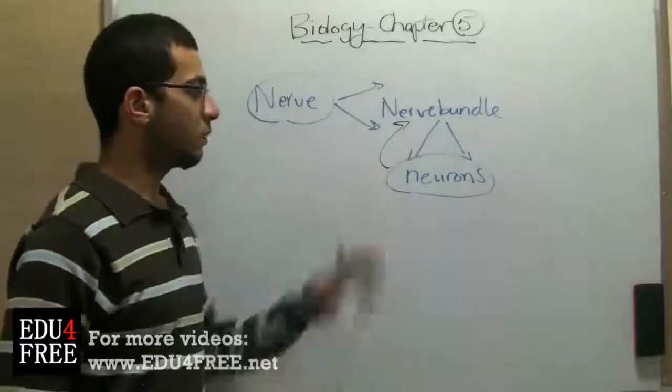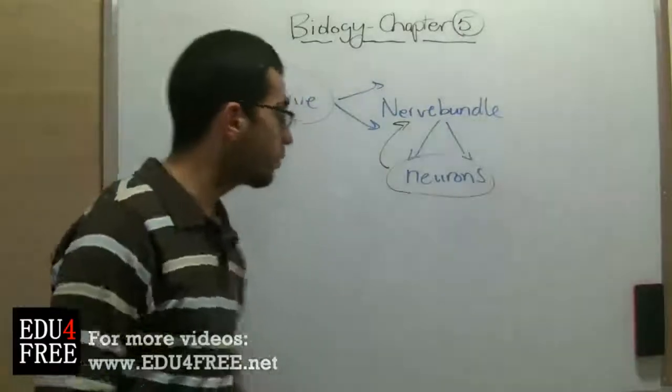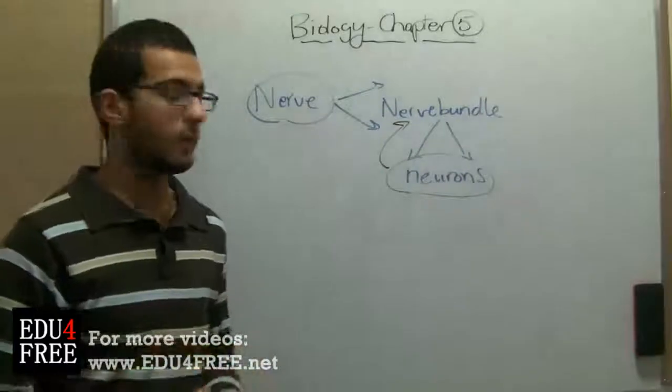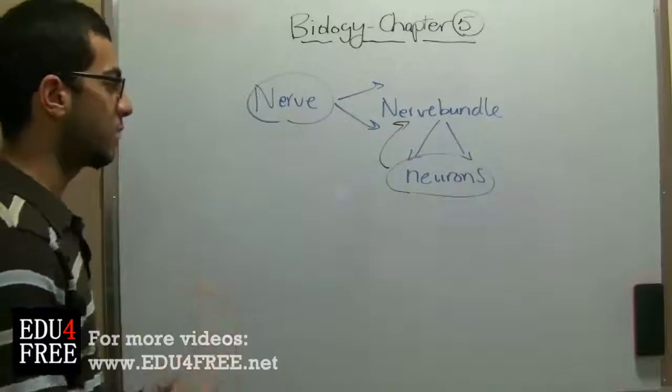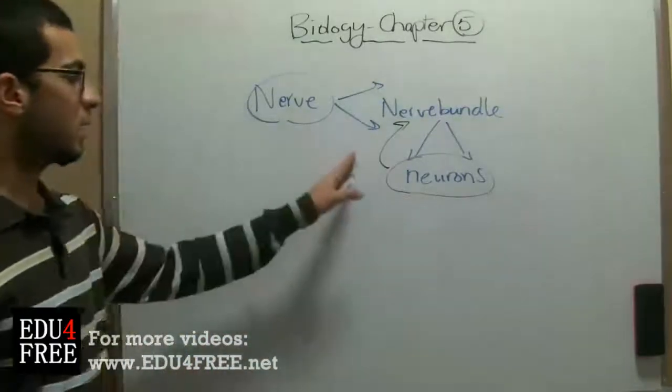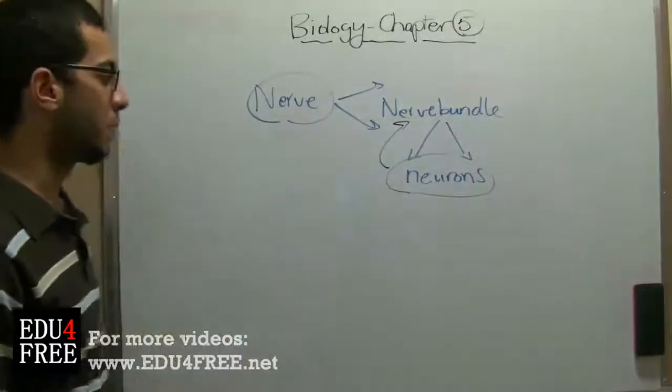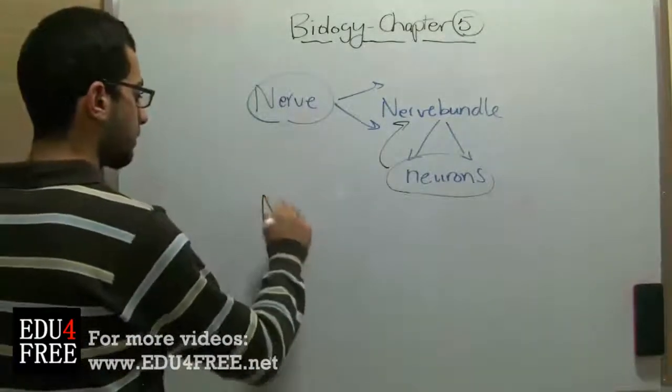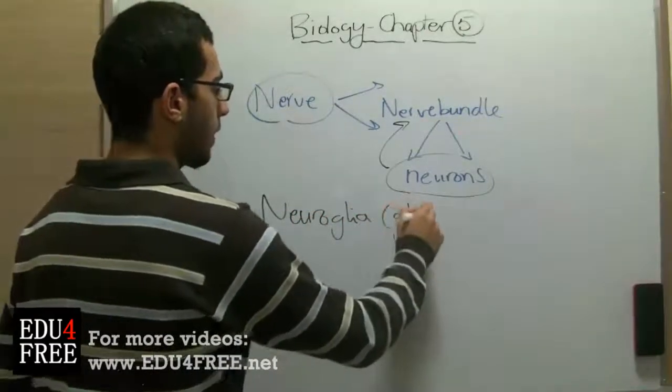So inside the nerve bundle there is some kind of connective tissue between the neurons that has the ability to multiply or divide. We said previously that neurons don't have the ability of division because their nuclei are devoid of centrioles. But these kind of cells between the neurons have the ability to multiply. These cells are called neuroglia or glial cells.